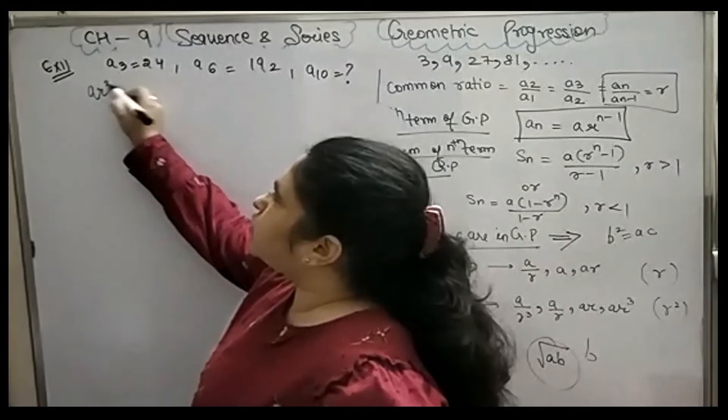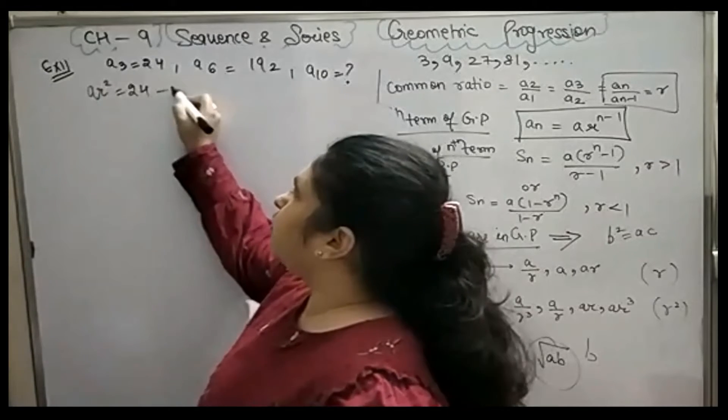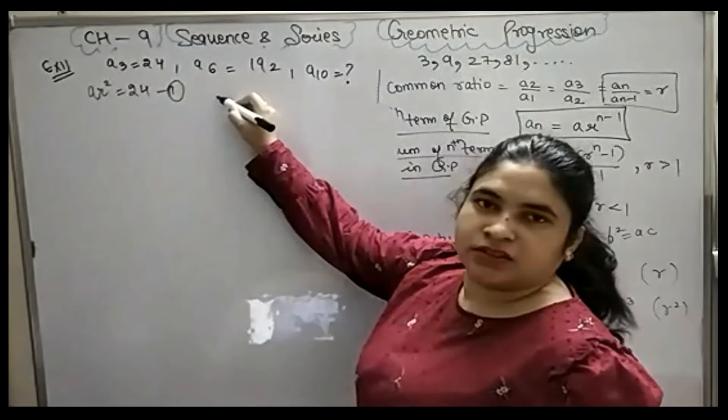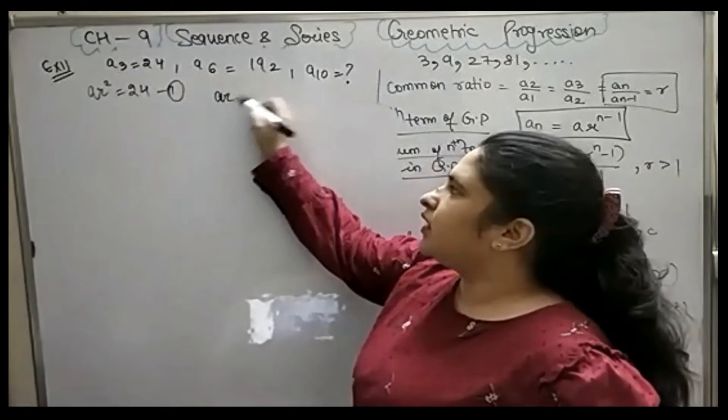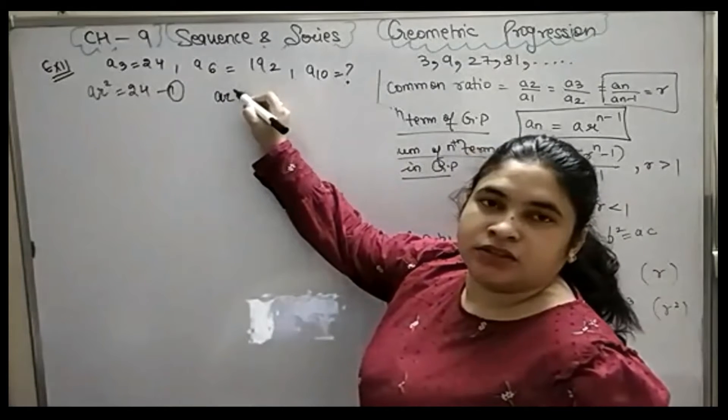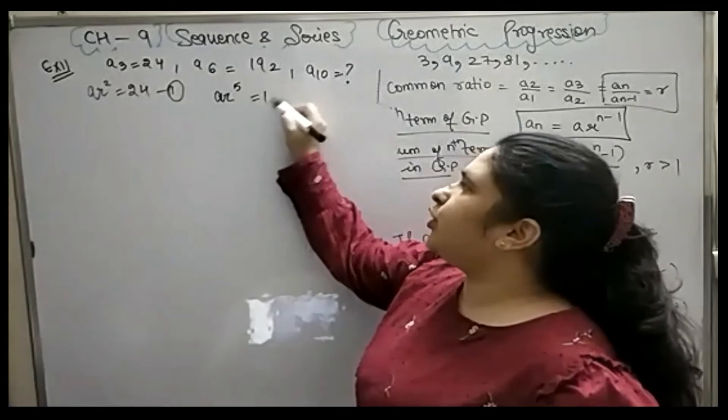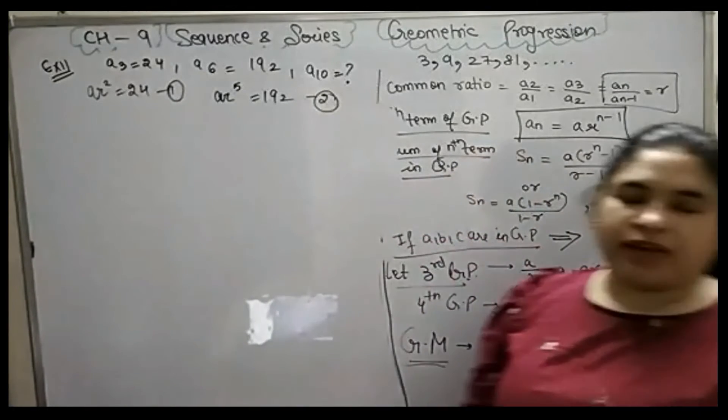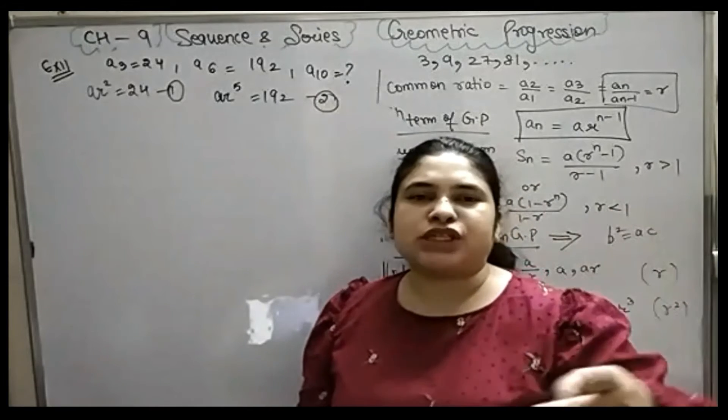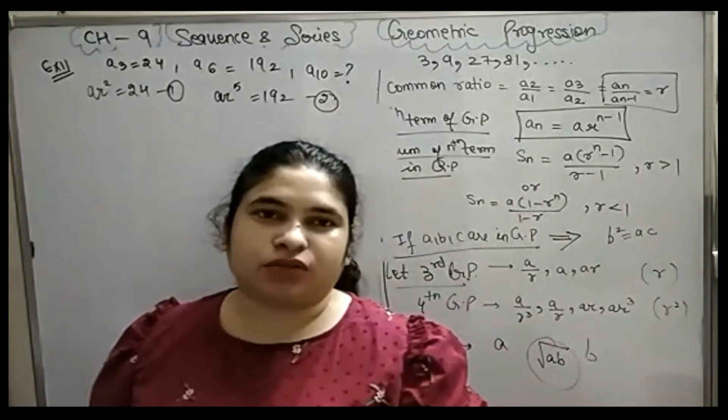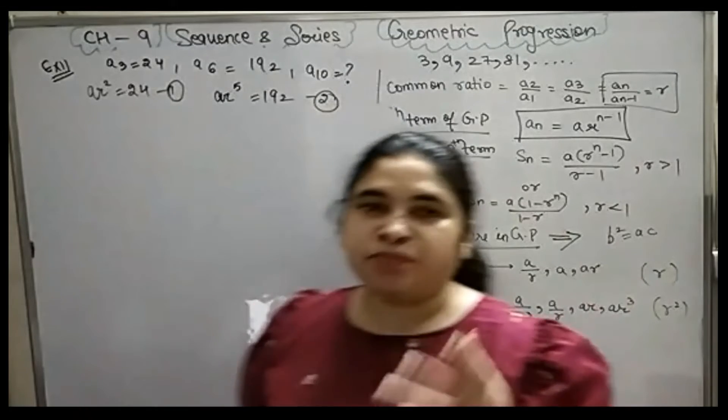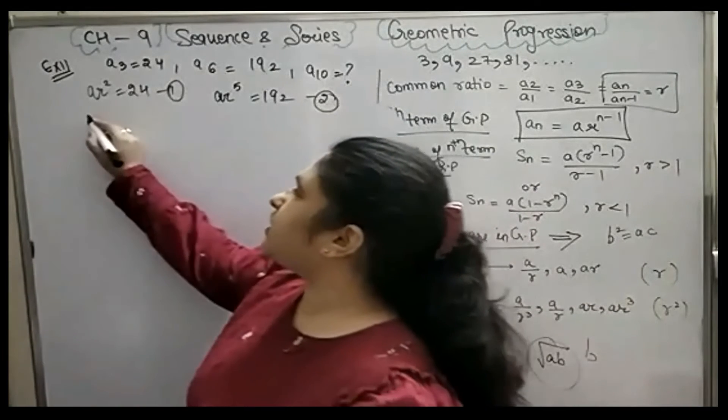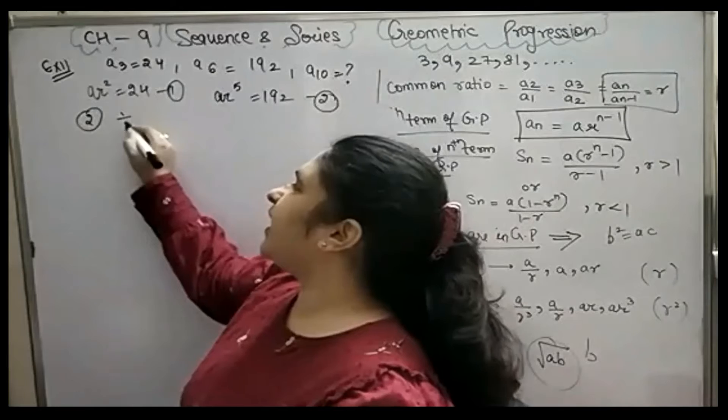AR squared is equal to 24 and the sixth term means AR to the power 5 is equal to 192. If you remember that when we did this in AP, there were two equations, linear equations in two variables. But here, with two equations, what do we do? We divide them.